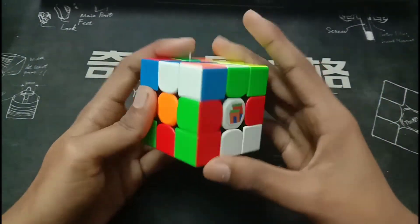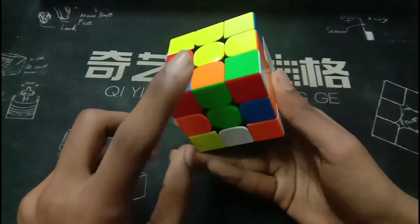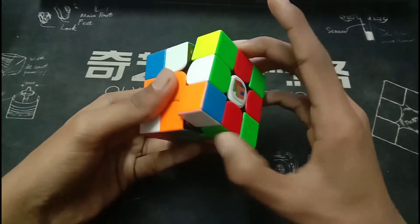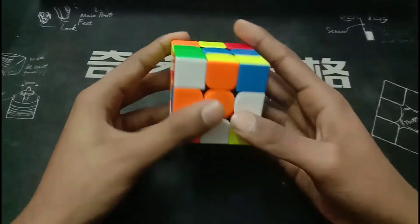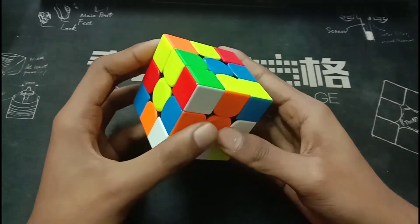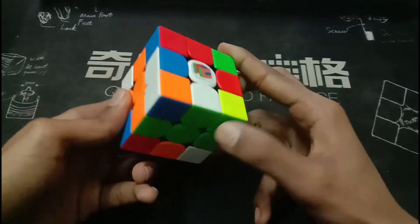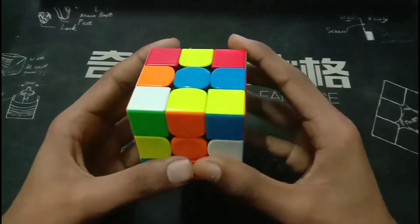So this is a pretty straightforward solution. He first does a D to bring the orange one here so that when he inserts the red and white one, these can all be relatively solved. And now he does a D to solve these three and an L2 to fix this one.